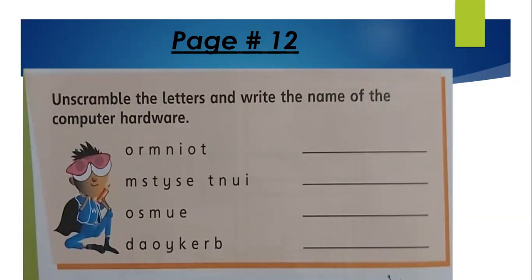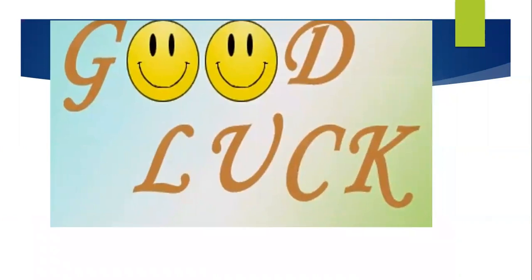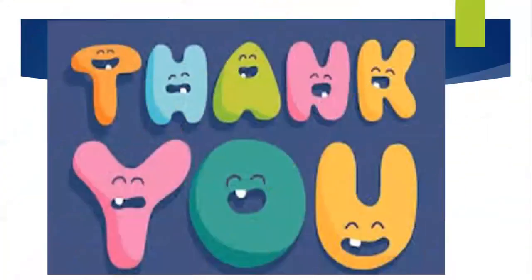Part two of your homework: you have to unscramble the letters and write the name of the computer hardware. There are four words given below, but their letters are not arranged. These are the names of computer hardware. You have to figure out which computer hardware each word refers to, arrange the letters, and write the correct word on the lines given in front of the scrambled letters. Good class — till next week, thank you so much, stay safe and stay home.